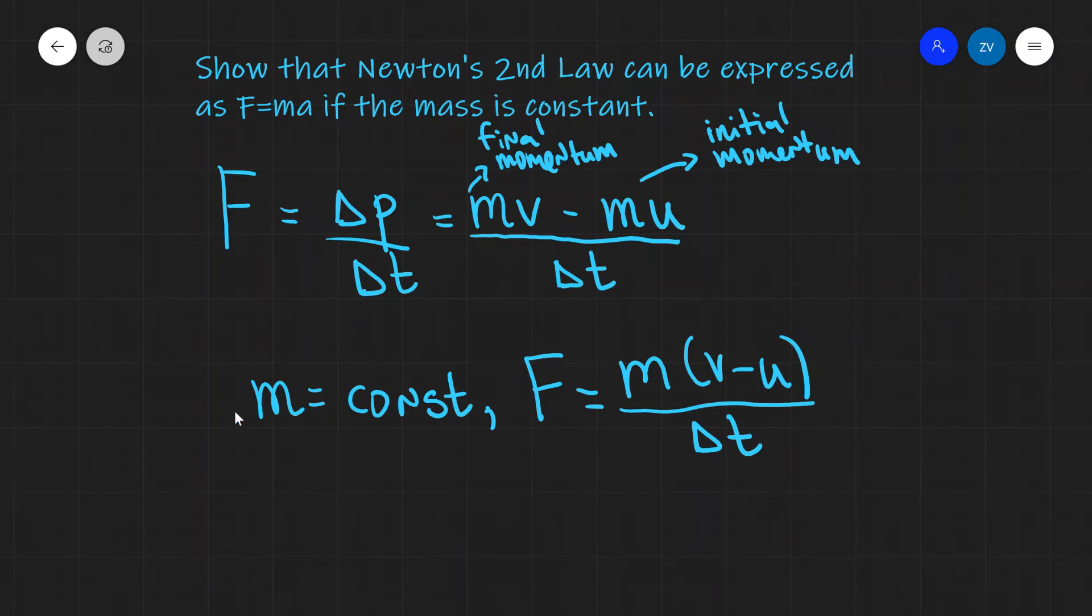But notice that we can only do this if the mass is constant. Well, have a look at that. We have v minus u over delta t.